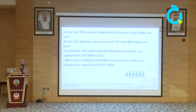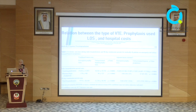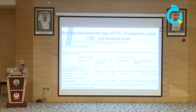When loss of well-being — such as disability and premature death — is included, the annual cost in Australia rises to around $20 billion. This study shows the relationship between the type of VTE prophylaxis used, the length of stay, and the hospital cost. As mentioned, VTE cost is closely related to length of stay: if we give the proper VTE prophylaxis, we reduce the length of stay and therefore reduce the hospital cost.